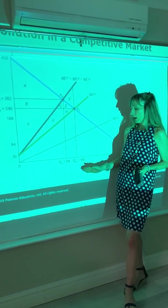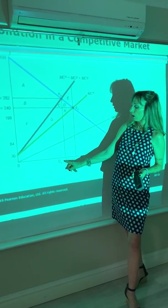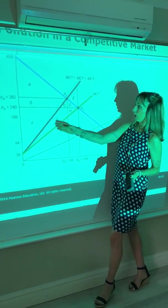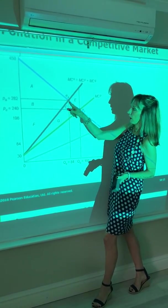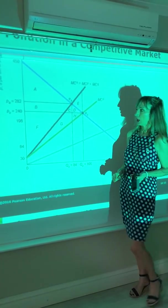We can then compare that welfare with the welfare under the social optimum, with the social marginal cost intersection demand curve. Output of 84, price of 282.